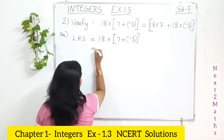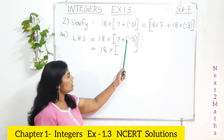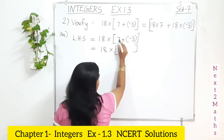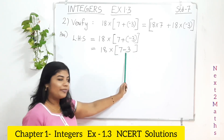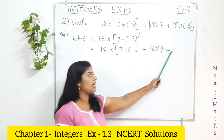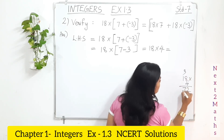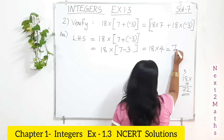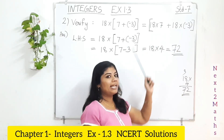18 multiplied with 4: 8 fours are 32, carry 3; 1 four is 4, plus 3 is 7. So your final LHS answer is 72. Now let's check the RHS side to see whether both are the same.